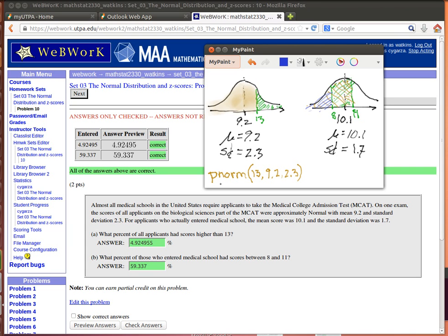We just need to ask for the P norm of 13 below 13. What's the probability below 13 in a mean of 9.2 and a standard deviation of 2.3? So let's look at what R tells us there.